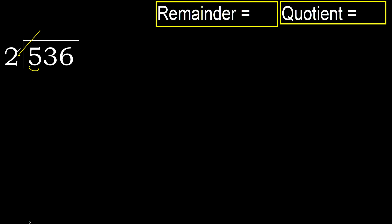2 multiply by 3 is 6 — 6 is greater. Multiply by 2: 4 is not greater. Ok, subtract: 5 minus 4 is 1.